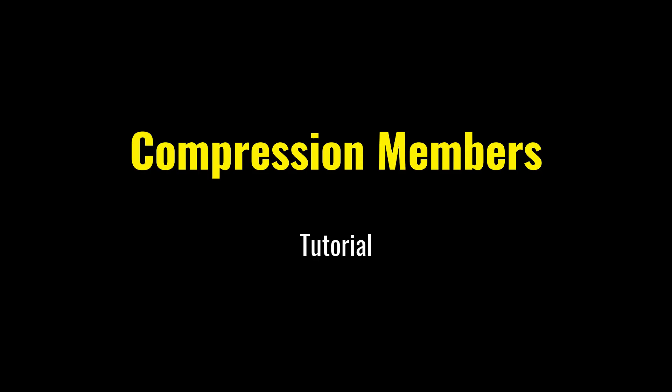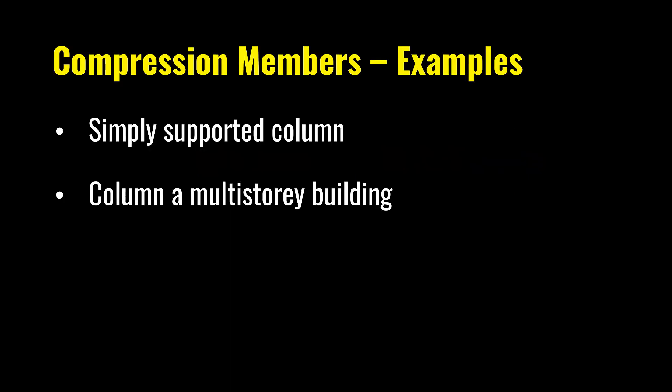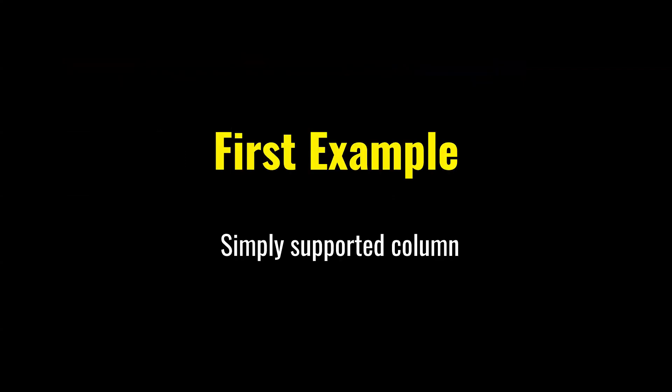In this tutorial I will cover two examples. One example is a simply supported column where a section is given to us and we have to find out the resistance of the section. And the second example is a column in a multi-story building. In this example the section is not given to us, structural layout is given, floor loading is given, and then we have to make design decisions. Let us solve the first example.